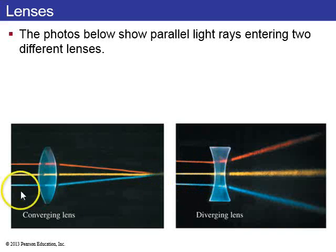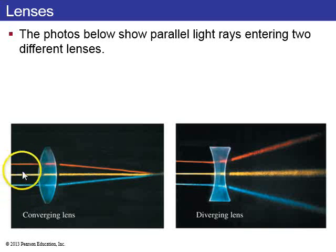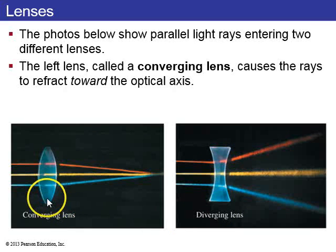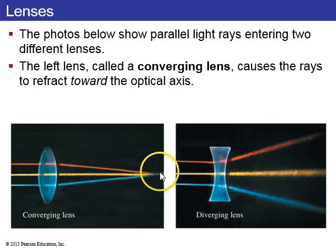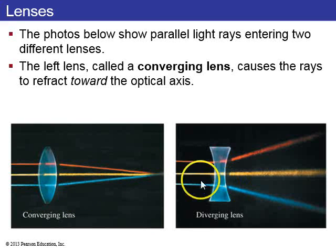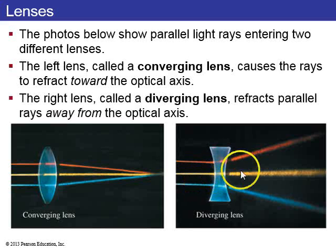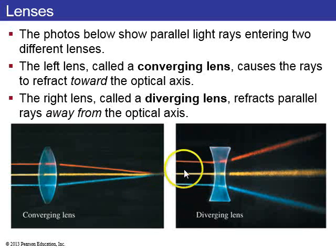These photos show some initially parallel light rays — the center one is yellow, and there's a blue and a red one above and below it — and they enter two different kinds of lenses. The one on the left is called a converging lens because these initially parallel rays bend when they go through the lens toward the optic axis such that they pass through some point, so they converge toward a point. The diverging lens has initially parallel rays that spread out away from the optic axis such that they seem to be diverging away from some point, so it's called a diverging lens.